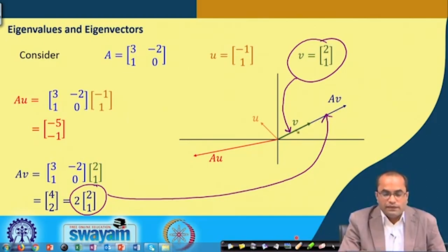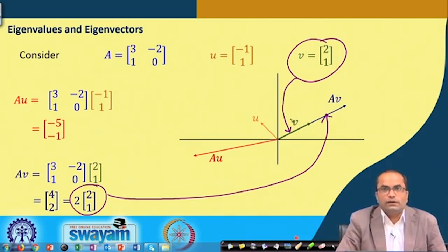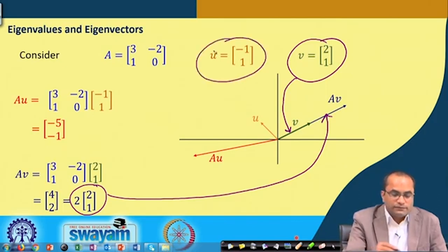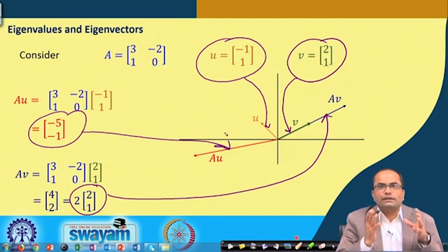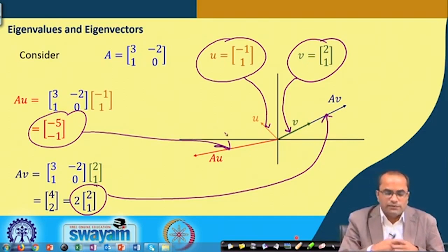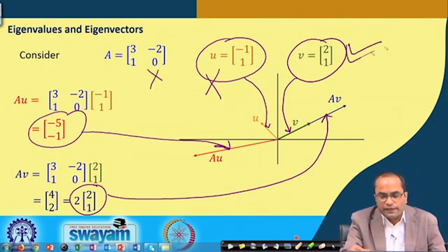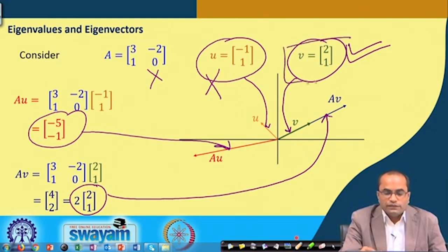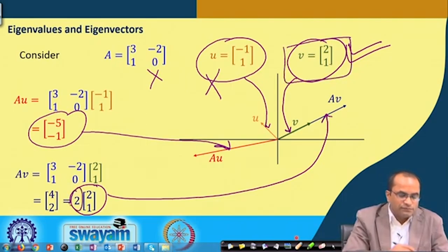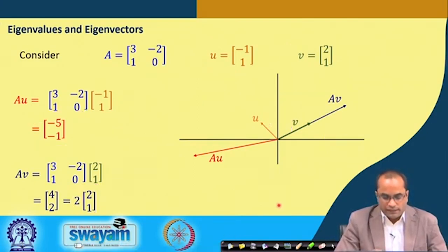AV and V have the same direction and different magnitudes. In the case of vector U, A times U gives a completely different vector — the direction does not remain the same. Our interest is in vectors whose multiplication with the matrix does not change direction, i.e., vectors parallel to the original. These are called eigenvectors, and the scalar that appears in front is called the eigenvalue.